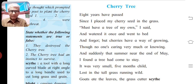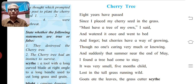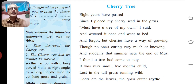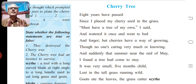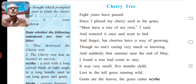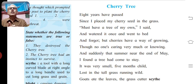Now let's start with the figures of speech in the poem. See the second line: 'Since I placed my cherry seed in the grass.' The figure of speech used in this line is alliteration. Write: 'Alliteration — here the sound of S is repeated pleasingly.' Keep in mind: alliteration is the repetition of the consonant sound at the beginning of words. You students usually make a mistake here — you write that the letter S is repeated, which is completely wrong.